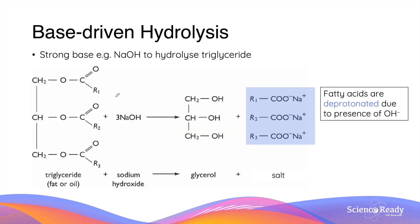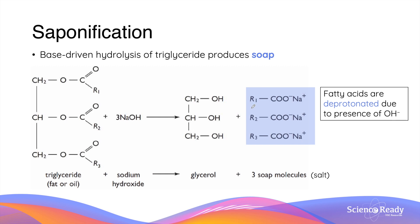Soaps are produced via base-driven hydrolysis of a triglyceride. Instead of using water, base-driven hydrolysis uses a concentrated solution of a strong base, such as sodium hydroxide, to break the ester bonds in the triglyceride molecule. This produces a molecule of glycerol, but instead of producing three fatty acids, three equivalents of salts are produced. This is because sodium hydroxide strips off protons from the fatty acid to form their conjugate bases, which then form salts with the sodium ions. These salts are our soap molecules.